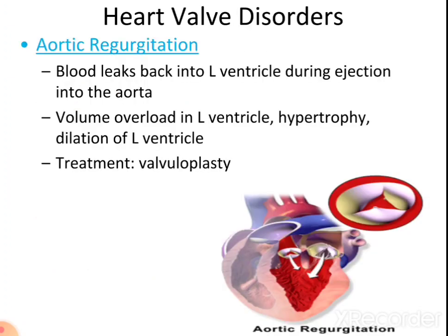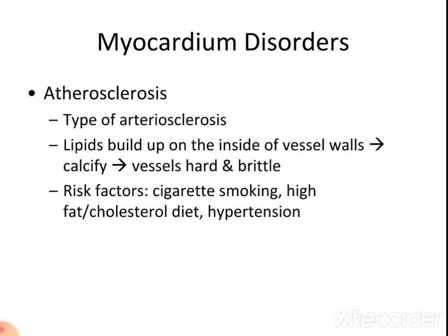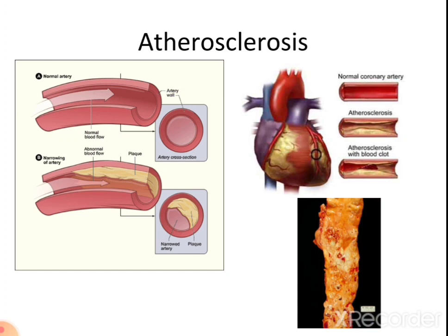In applied anatomy: aortic regurgitation occurs when blood leaks back into the left ventricle during ejection into the aorta, causing volume overload leading to hypertrophy and dilatation of the left ventricle. The aortic valve is incompetent in this case and treatment includes valvuloplasty, in which the valves are replaced. Atherosclerosis involves lipid buildup inside the coronary vessels, which become calcified, hardened, and narrowed; causes include cigarette smoking, high-fat and high-cholesterol diet, and hypertension.